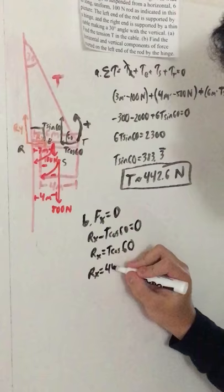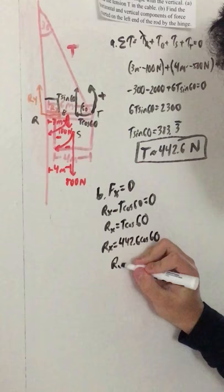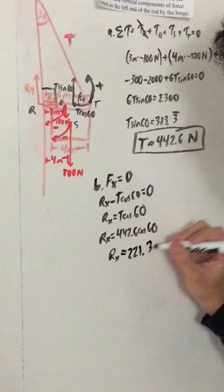All we do is add T cosine 60 to both sides and substitute the equation. And what we're left with is approximately 221.3 newtons.